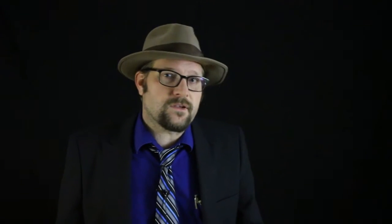The first type of elasmoid scale is ctenoid scales, and they have a variously developed spiny posterior margin or comb. These scales can be really thick and are found in fish like perch.